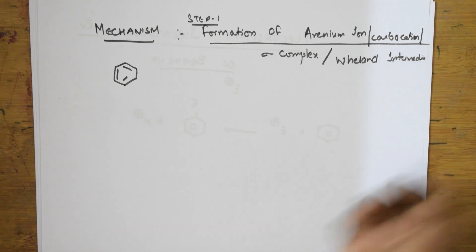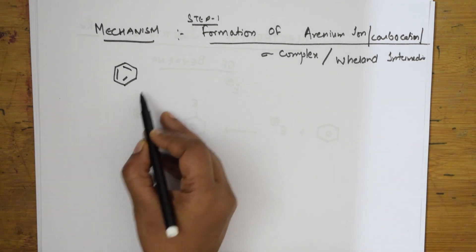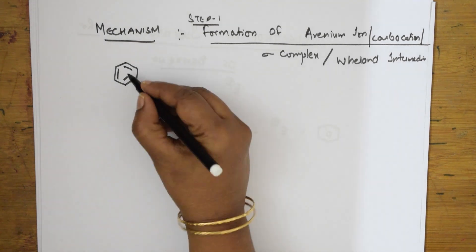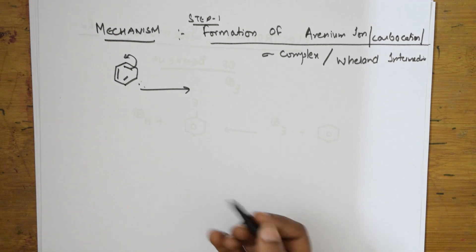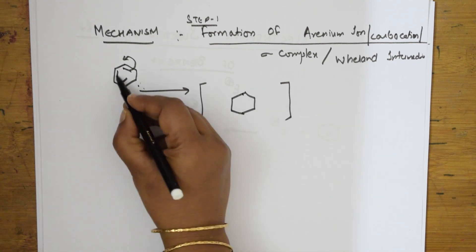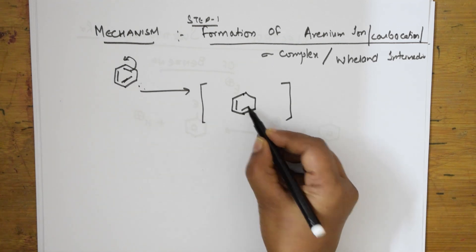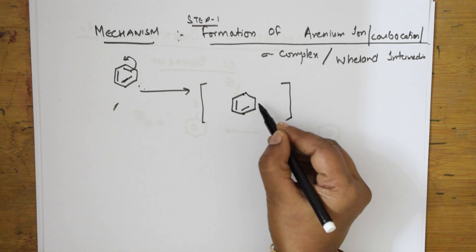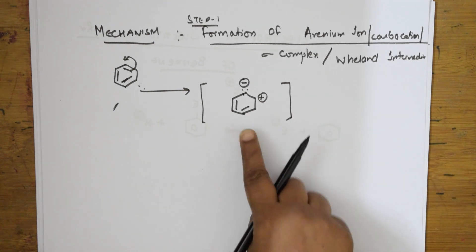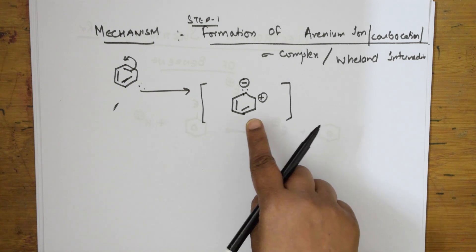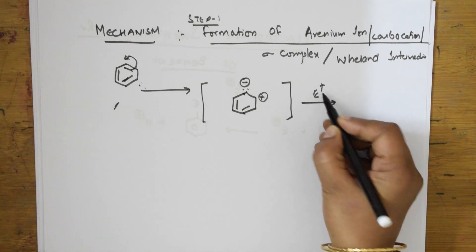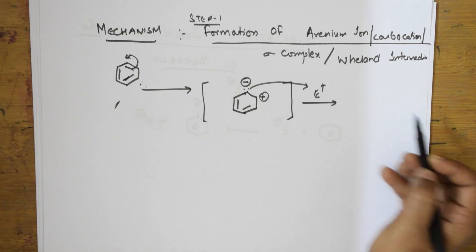I am drawing benzene. There is a shift of the pi bond. When it shifts, this carbon loses electrons and becomes positive, while the other end gains electrons and becomes negative. This species — the arinium ion, carbocation, sigma complex, or arenium intermediate — is formed. When the electrophile attacks, the electrons are donated to the electrophile, giving us a structure with hydrogen and electrophile attached, plus a positive charge.